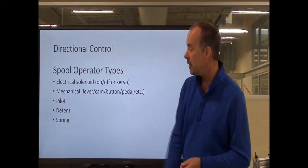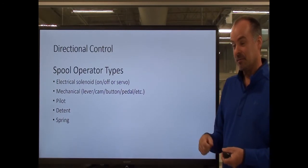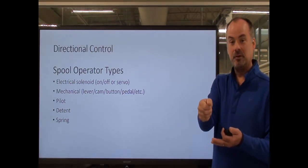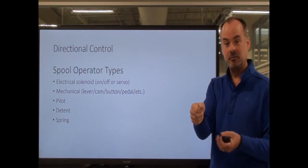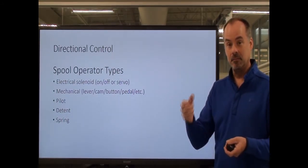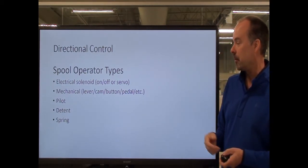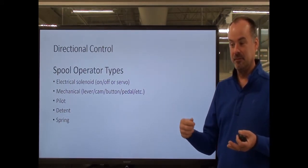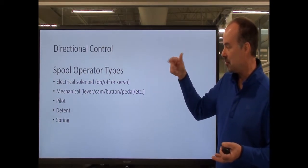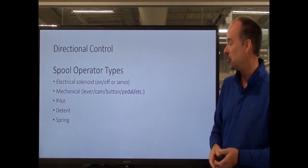You can have a detent-type operator — it's like a gear shift. When you put it in one position, you actually lock or detent into that position. You can let go and it'll stay, and then you have to operate it again to move it out of that position. Spring operators are what we've seen where, when the other operator — whether solenoid, mechanical, pilot, or detent — releases, the spring is used to return the spool to a neutral position.